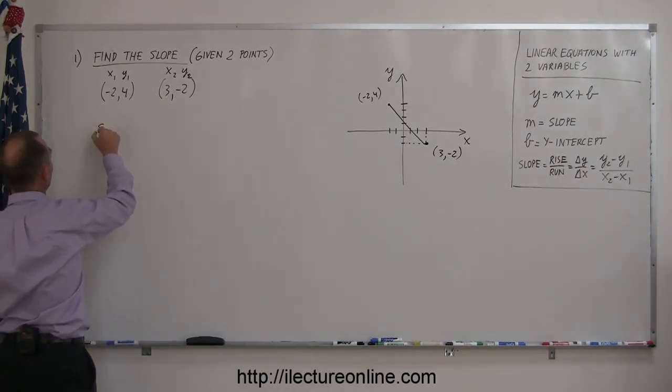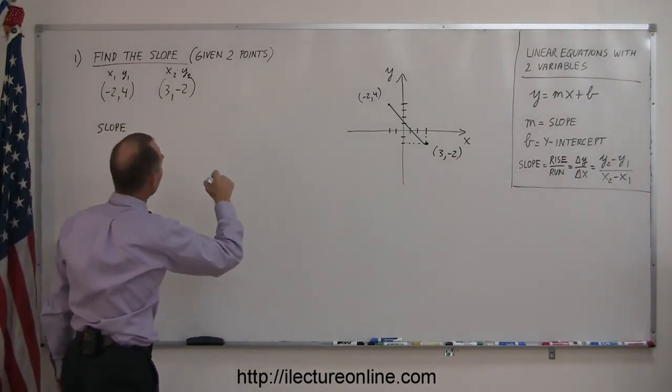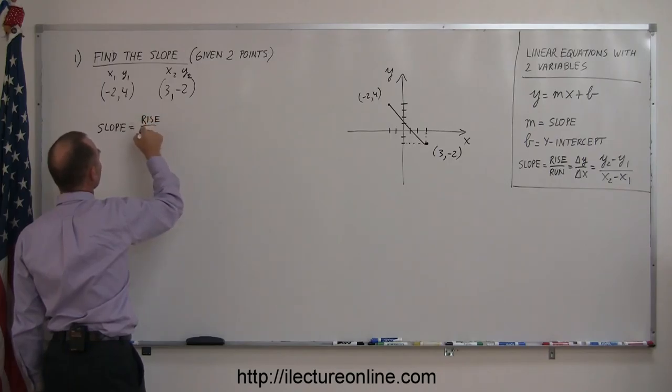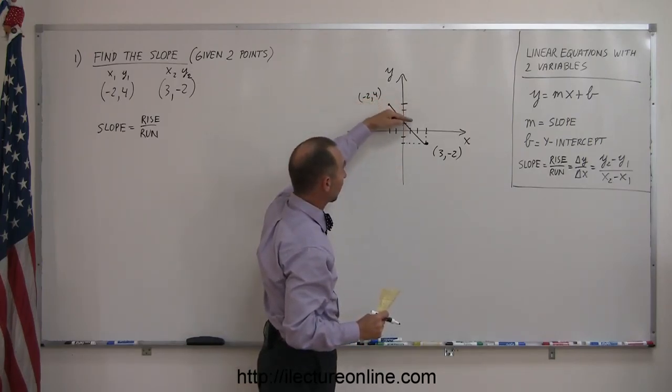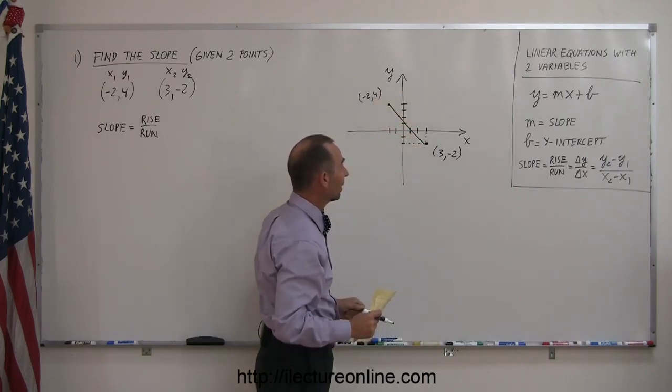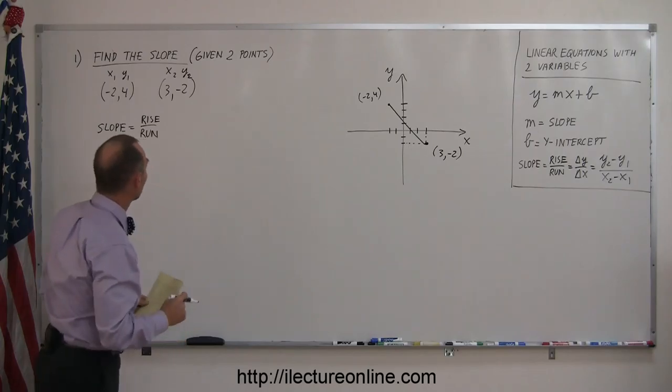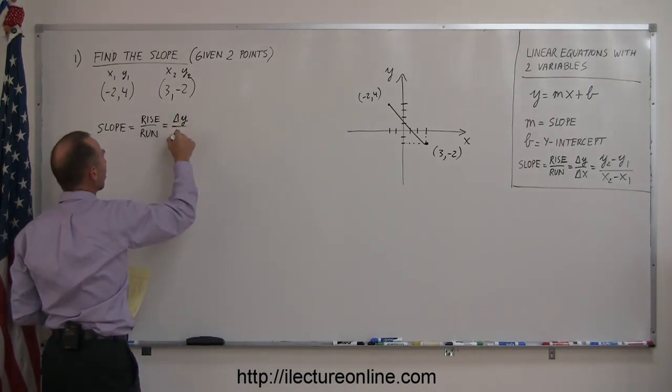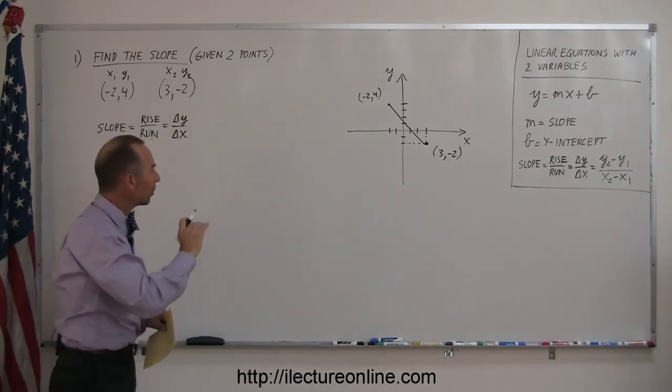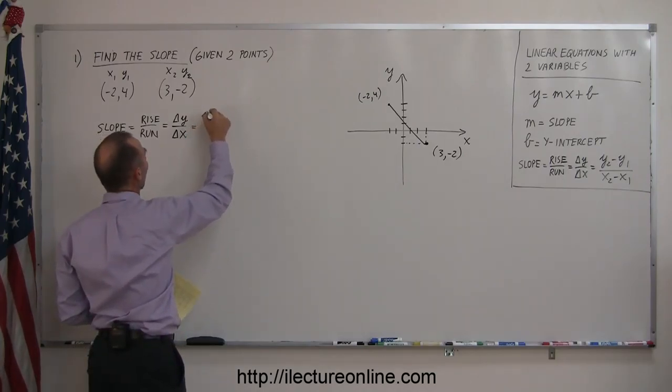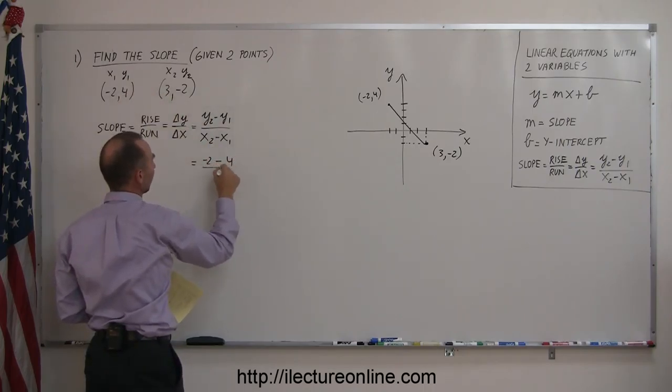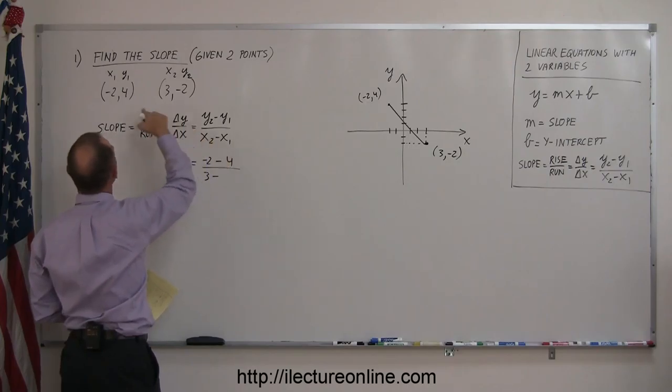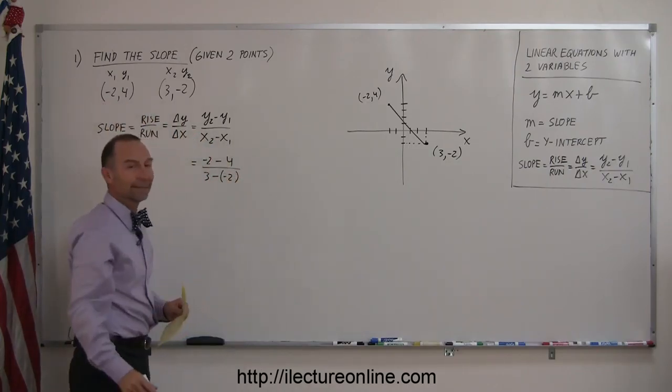So by definition, the slope, just like we defined over there, is equal to the rise over the run. That means how much does the height change. In this case, of course, the rise is a negative number because we actually drop in elevation, so the rise is negative over a certain amount of run in the x direction. So it's the change in the y value divided by the change in the x value. This little triangle here means change. How much does the value in y change? And by definition that is y2 minus y1 divided by x2 minus x1. So y2 is negative 2 minus y1 which is 4, divided by x2 which is 3 minus x1 which is a negative 2. So be careful, we have to put parentheses around that negative 2 like that.